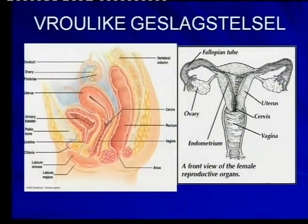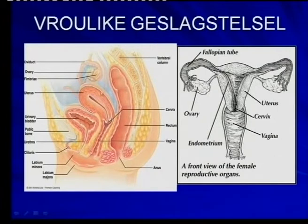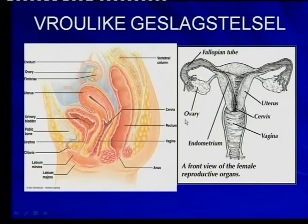The female reproductive system — we have a lateral view, in other words a side view, and a frontal view. This is more idealized, to try to do a proper picture, a line drawing. You can get any diagram and you must know the parts. These are the important parts.